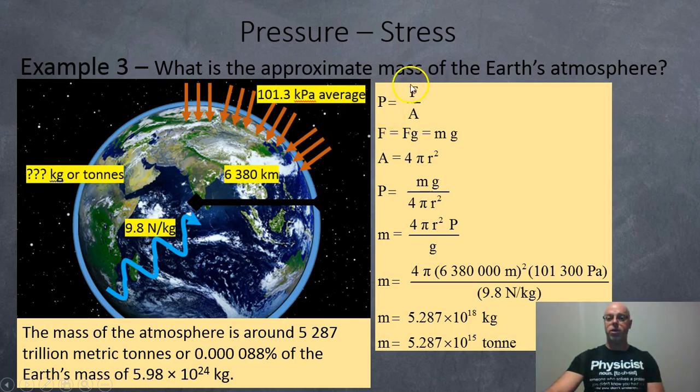So to find that out, we have pressure's force over area. So the force is going to be the force of gravity pulling the air down onto the ground, towards the ground. And so that's going to be mg. So we're going to replace force right here with mg. The surface area of the world, well, it's a sphere, so it's approximately 4 pi r squared. So we're going to replace that down there for the area.